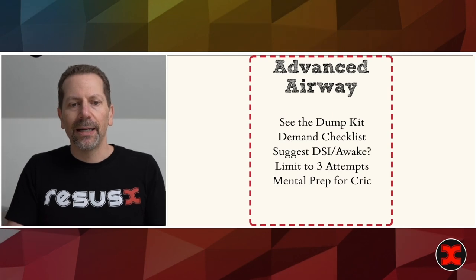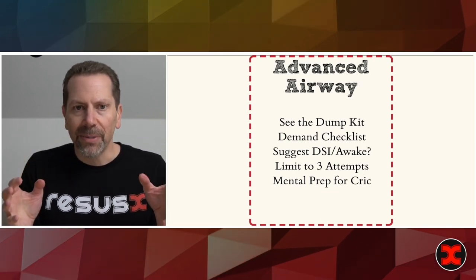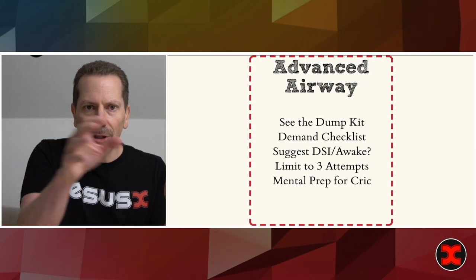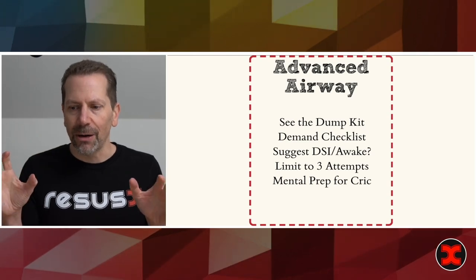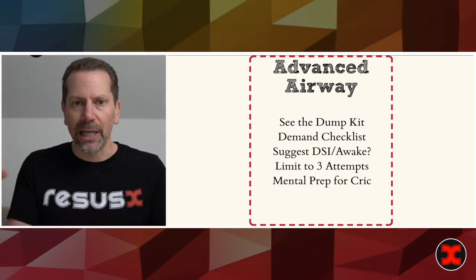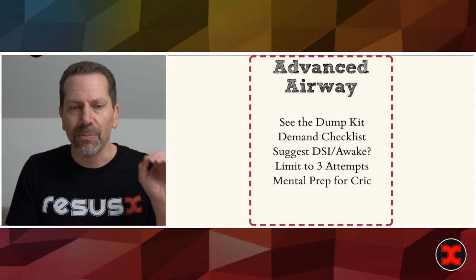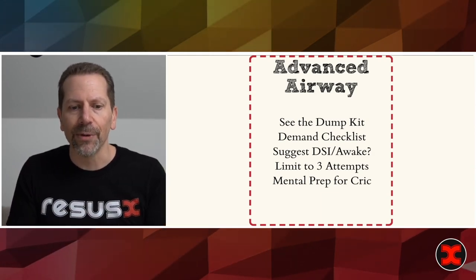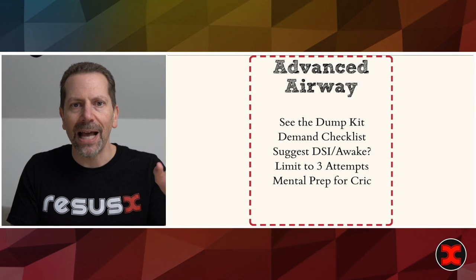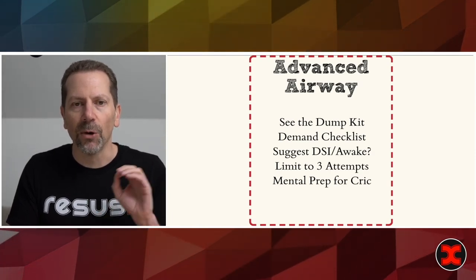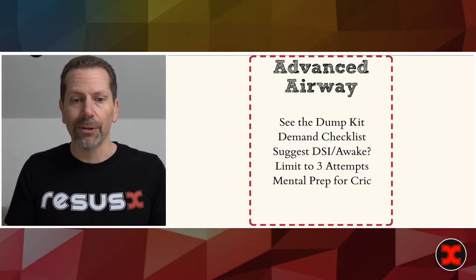Advanced airway — not every trauma needs it, hence the dotted lines. Use a dump kit: all items on a table in front of you, not stuck on the patient's chest where they'll fall on the floor. As trauma team leader you're supervising, not doing the airway — you have a sub-team for that. But you can demand they use a checklist, suggest whether this should be awake or a delayed sequence intubation, limit attempts to three, and mentally prepare yourself for a cric if that sub-team cannot manage the airway. This is one area where, if you're the most experienced person in the room, you may need to break away to perform a cricothyrotomy.